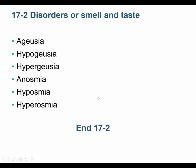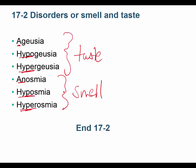There are also disorders of smell and taste. The prefix 'a-' means without, 'hypo-' means less, and 'hyper-' means more. Ageusia means without the sense of taste; hypogeusia means a lessened sense of taste; hypergeusia means a heightened sense of taste. Anosmia means lacking the sense of smell; hyposmia means a lessened ability to smell; hyperosmia means a heightened ability to smell. And that's it for taste and the link between taste and smell.